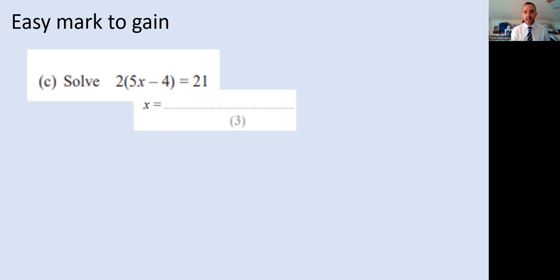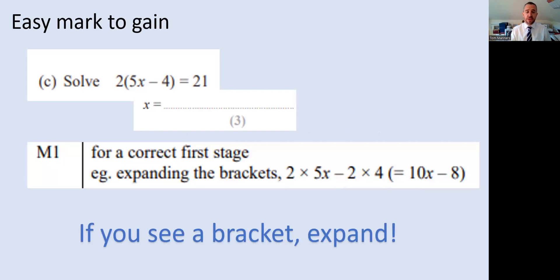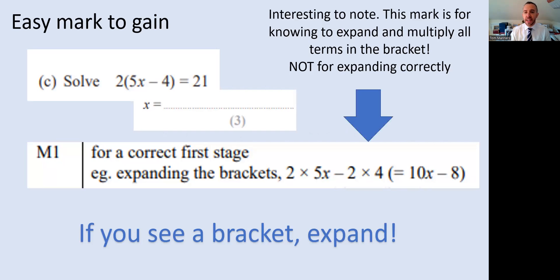For a start, an easy mark to gain. A teacher told me this stuck with them for ages: If you see a pair of brackets, just expand them straight away for a correct first stage. It says here the first method mark. Show your workings. Expand those brackets. Interestingly, it's not for getting it right. The mark is given for knowing to multiply out, for knowing to multiply all the terms in the bracket with the two that's on the outside.